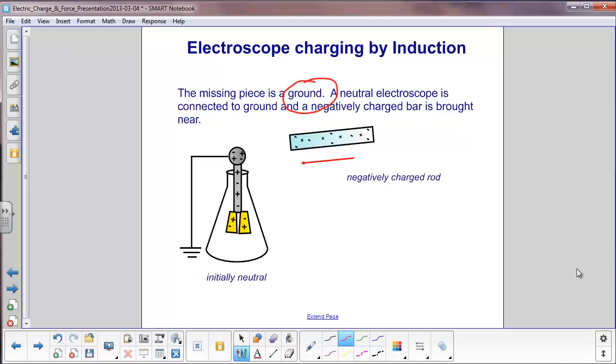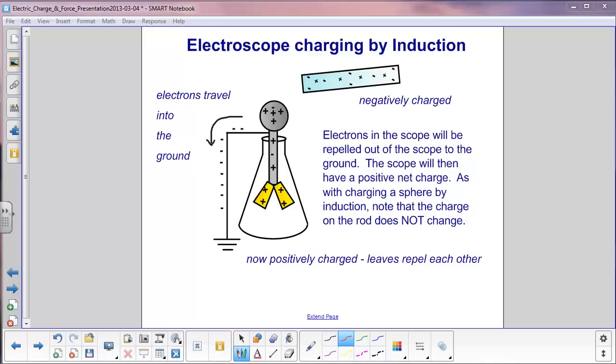A neutral electroscope is connected to the ground and a negatively charged bar or rod is brought nearby. The negatively charged rod is brought near the top of the electroscope but does not touch it.